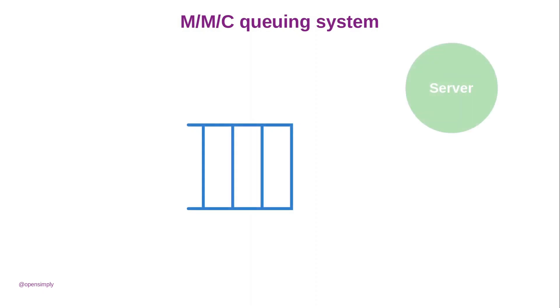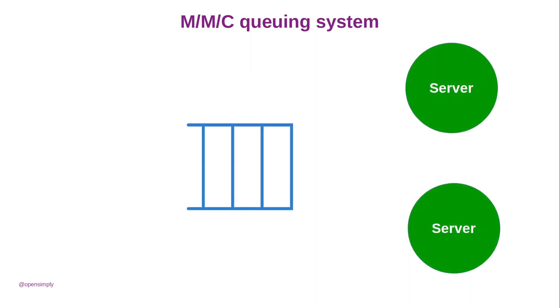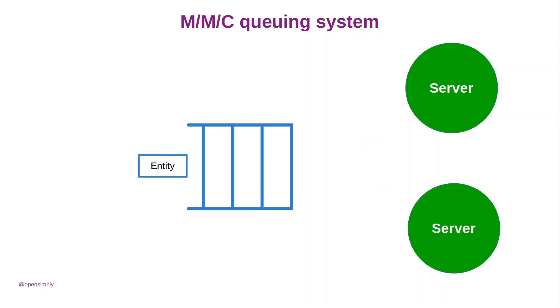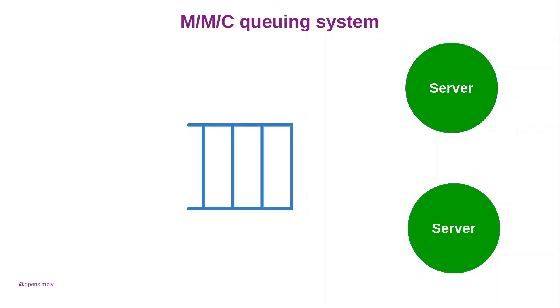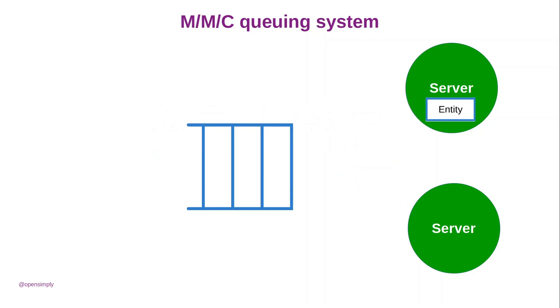The MMC queuing system consists of several servers with a common queue. At the beginning, the queue is empty and all servers are idle. When an entity arrives, the selector searches for any idle server. If an idle server is found, since the queue is empty, the arriving entity is passed directly to the server and begins to be serviced. If at least one server is idle, the arriving entity starts to be serviced instead of being queued.